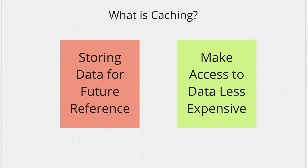By caching data you're storing data for future reference. Let's say every time your website loads you need to get some data from an external API. Alternatively, every time someone goes to your website your front-end code makes a request to your backend server which needs to fetch some data from a database. In both these cases, getting this data is expensive.